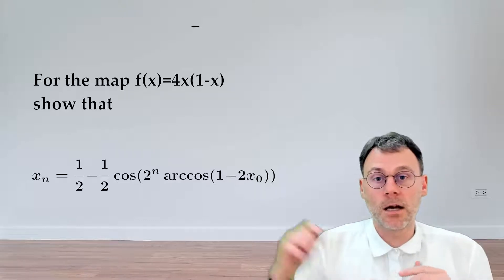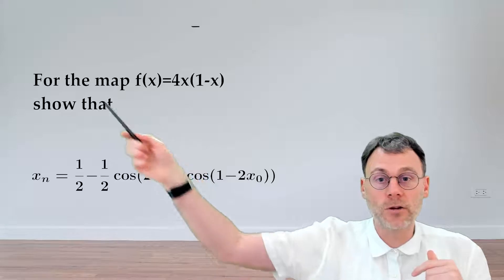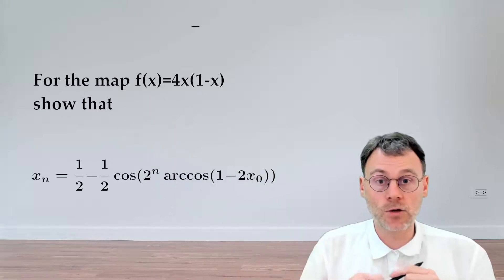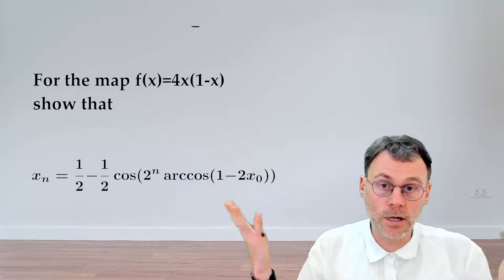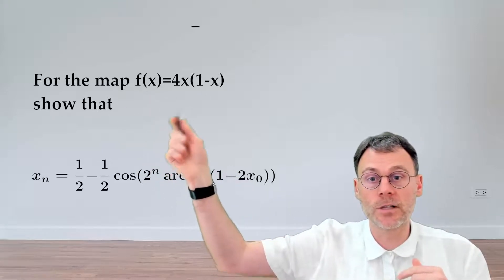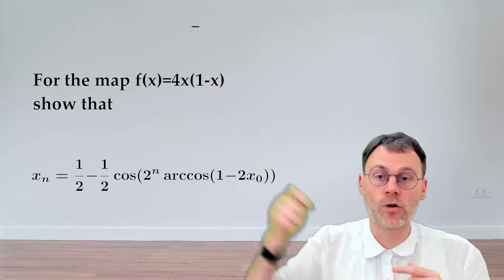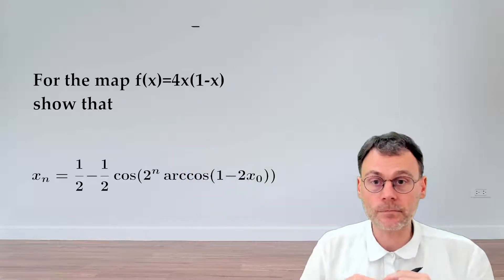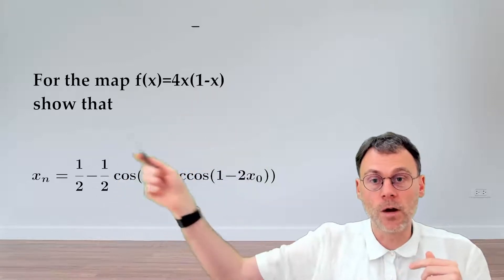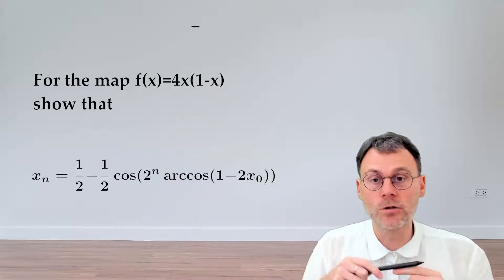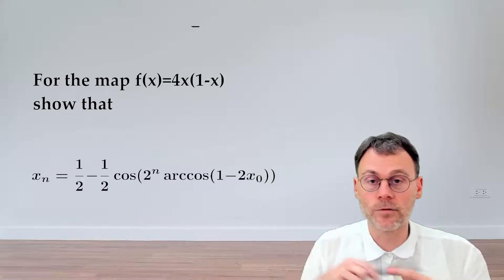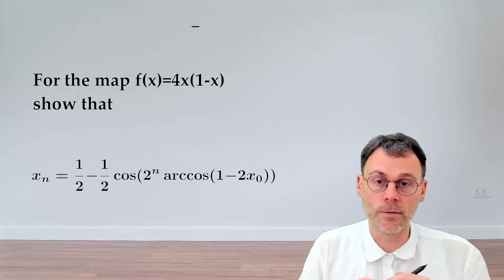In this exercise we have a logistic map — actually the most chaotic logistic map you can think of, because of this factor 4 here. Here's a fun formula which allows you to immediately calculate the nth element of a certain orbit.